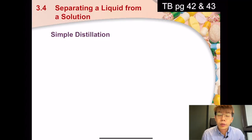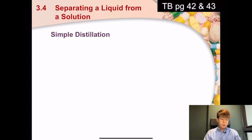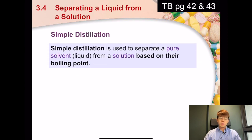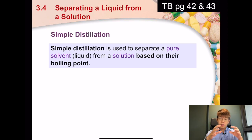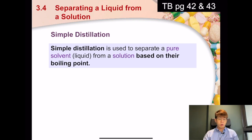Today we are going to learn about simple distillation. You can turn to textbook page 42 to 43. Simple distillation is used to separate the pure solvent from a solution. A solution is a solid plus a liquid, and the solid needs to be soluble in the liquid — so we are extracting the liquid, which is called the solvent.